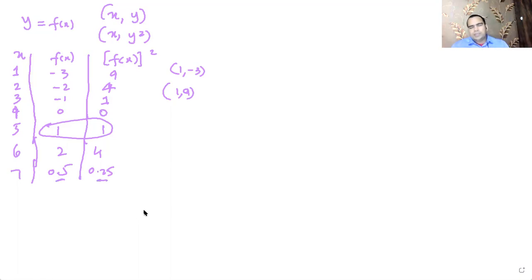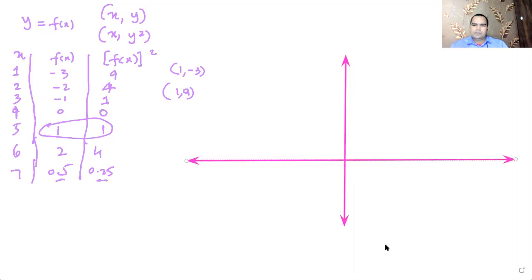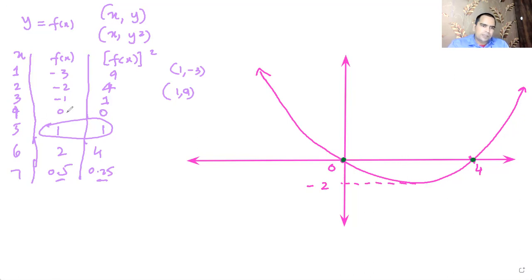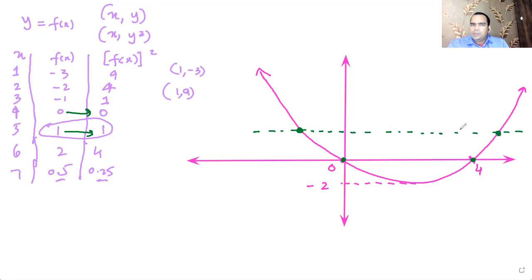Let's take a basic function and try to sketch the square of it. Say the original graph has the point (0, 4) and another point at approximately negative 2. When you square y=0, zero squared is still 0, and one squared is still 1. Draw the y=1 line — points on that line are not going to change, for example (5, 1) remains at (5, 1).